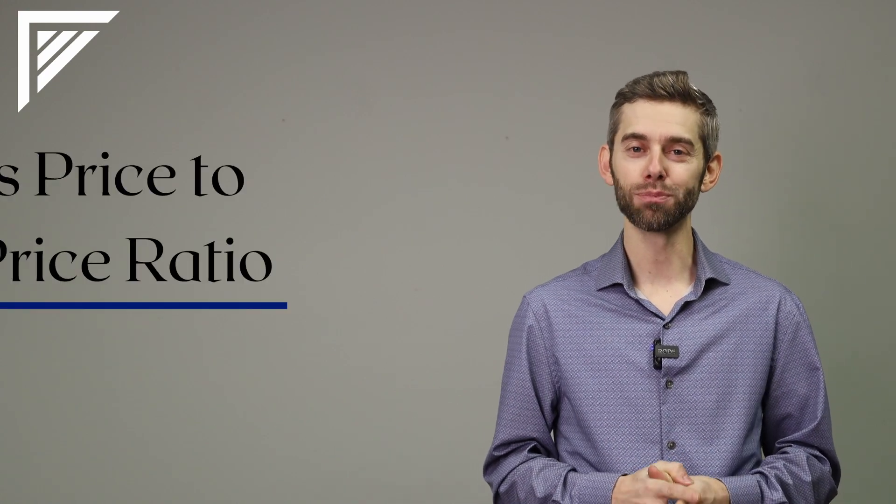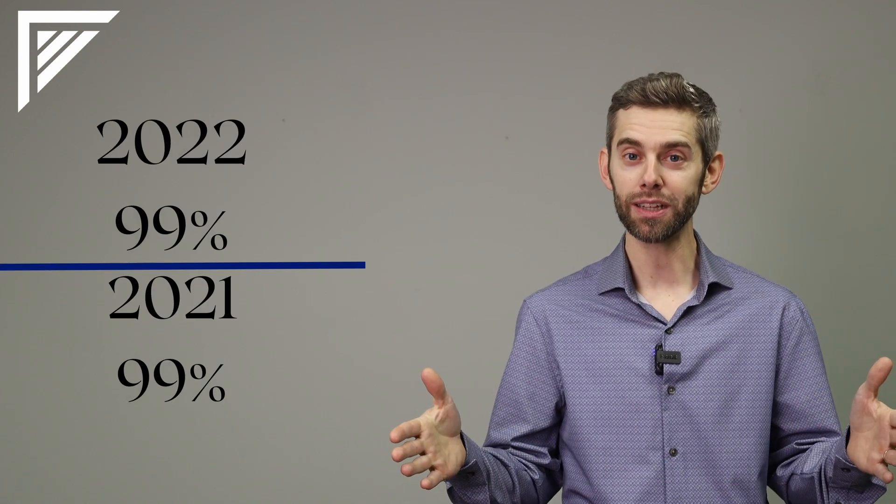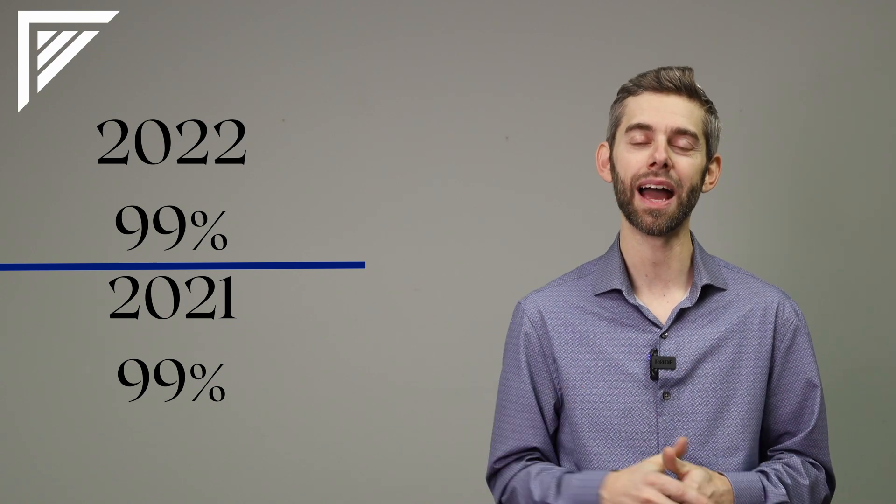The sale price to list price ratio - that's the percentage that a seller was getting in comparison to what they were asking - 99% last year and 99% in 2021. So that was holding steady as well.